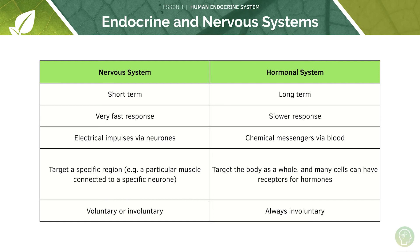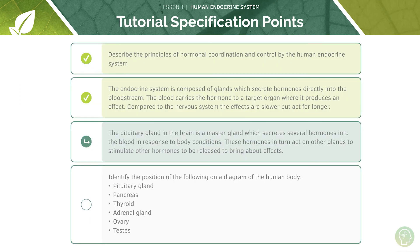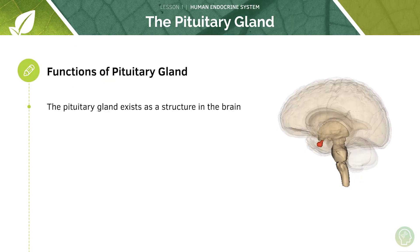The hormonal system is always involuntary — we can't control it — whereas the nervous system can be either voluntary or involuntary. Voluntary movements via the nervous system include sprinting in a 100 metre race, while involuntary movements include the reflex arc as covered in previous tutorials. If you're unsure about any of that, go back and watch the tutorials on the nervous system — it covers the basic concepts that will help you understand the endocrine system.